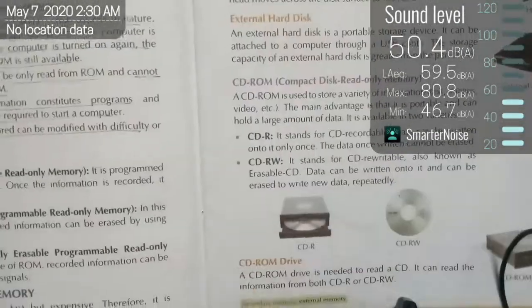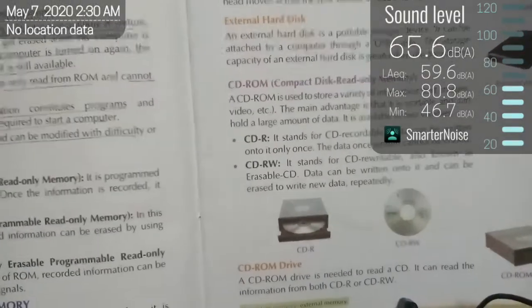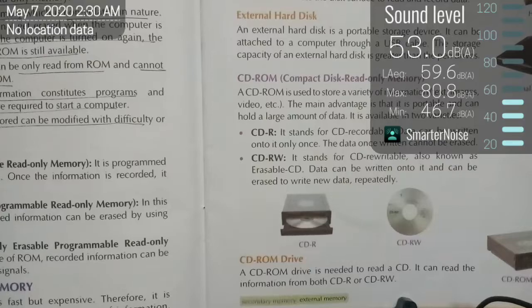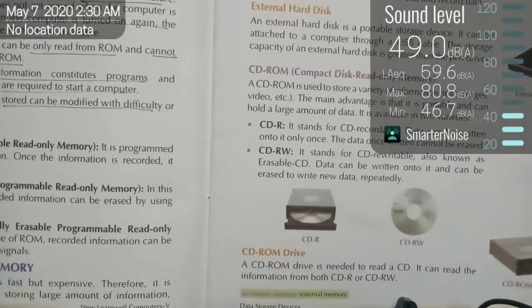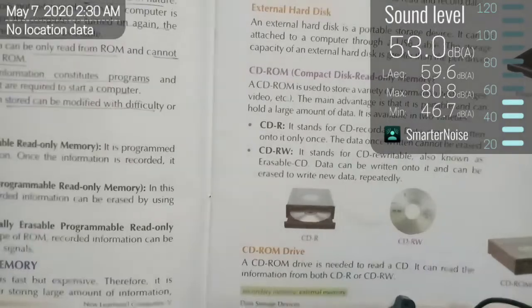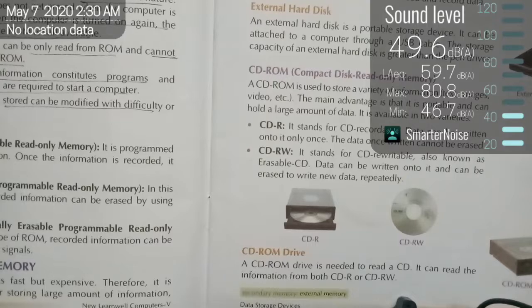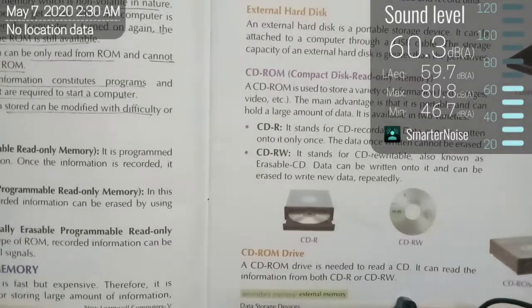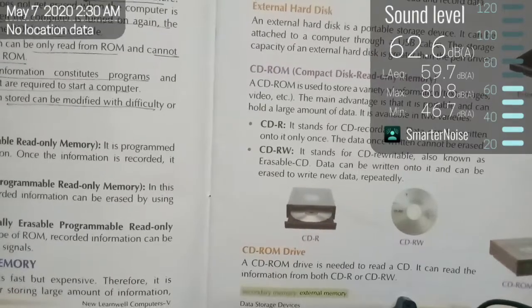Next we have a CD-ROM — Compact Disk Read-Only Memory. A CD-ROM is used to store a variety of information such as text, images, video, etc. The main advantage is that it is portable and can hold a large amount of data. It is available in two varieties: CD-R and CD-RW.